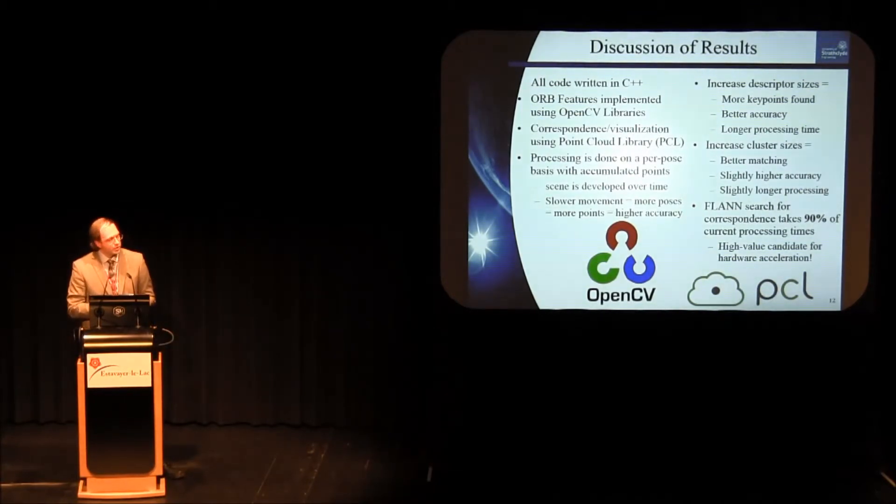Just so you know, all of the code is written in C++. I use OpenCV for the 2D parts, Point Cloud Library for the 3D parts, as well as a bunch of my own routines in between. We process per pose sequentially, so we don't have to do combinatorial numbers of images at once. I have found increased descriptor sizes and also increasing cluster sizes both increase accuracy, descriptor size mostly. But they also increase processing time, which is the critical part. And of course, FLAN, as I mentioned, the matching is 90% of what we need to overcome. So that's really the candidate for hardware acceleration at this point.